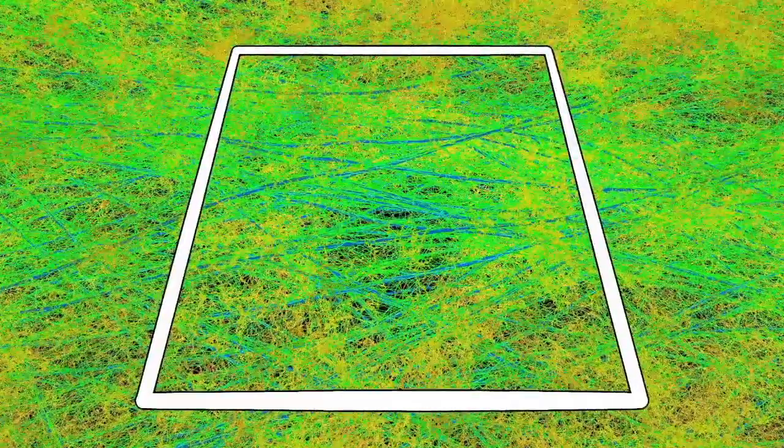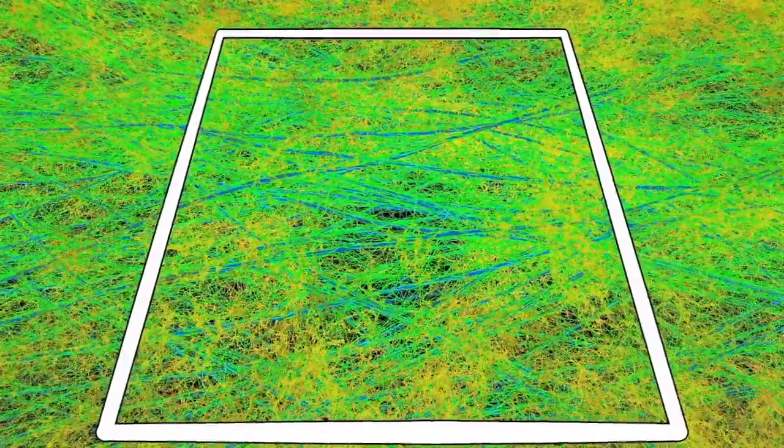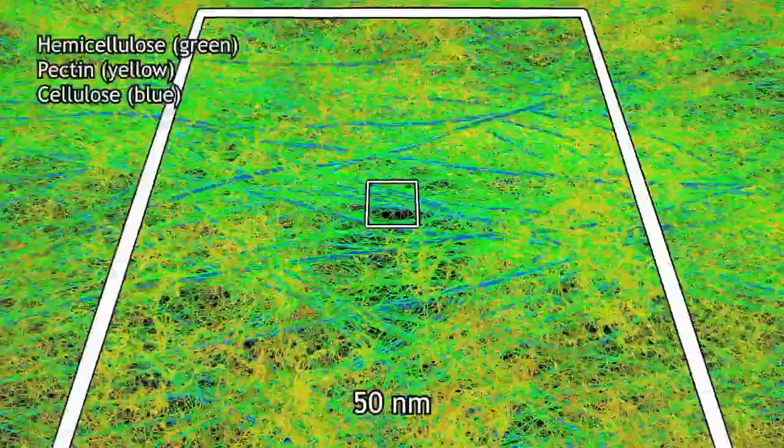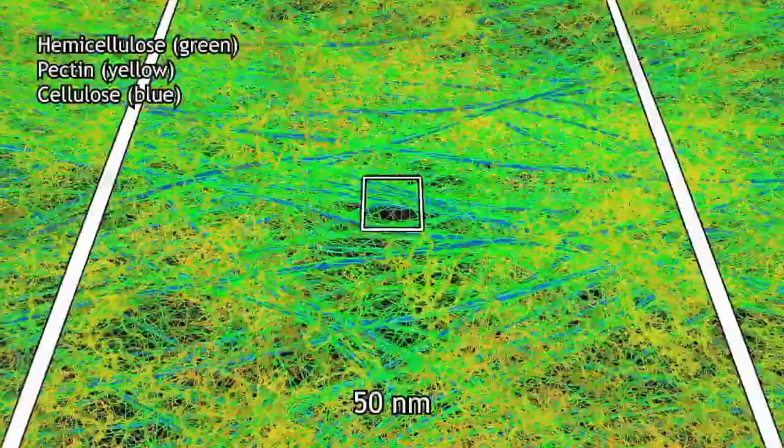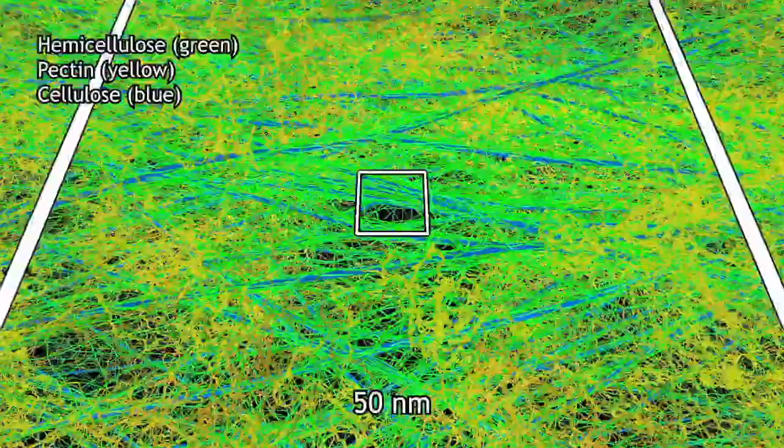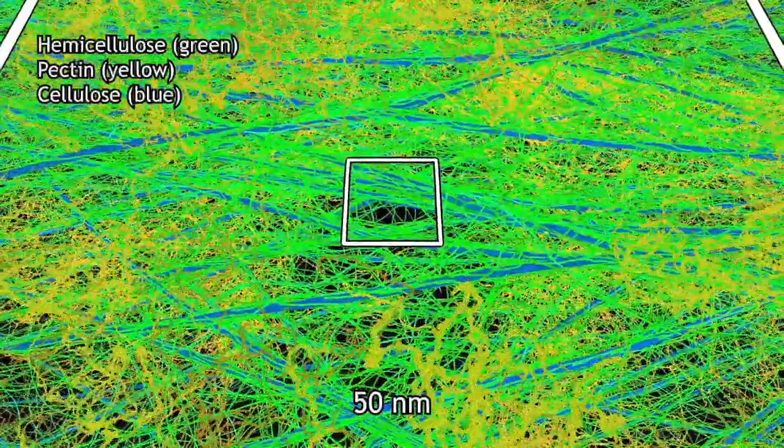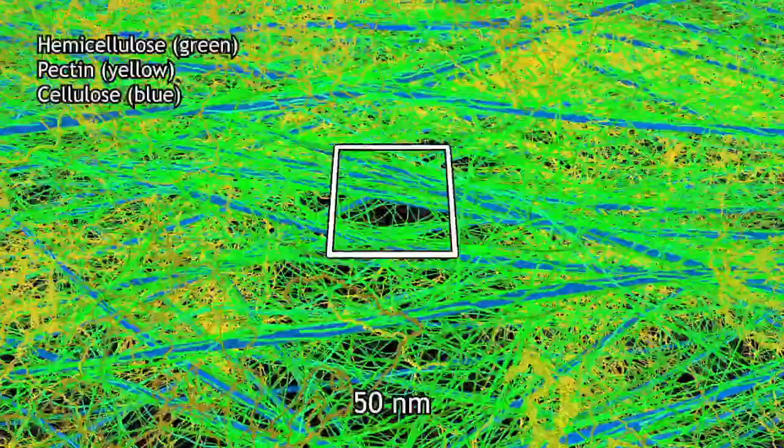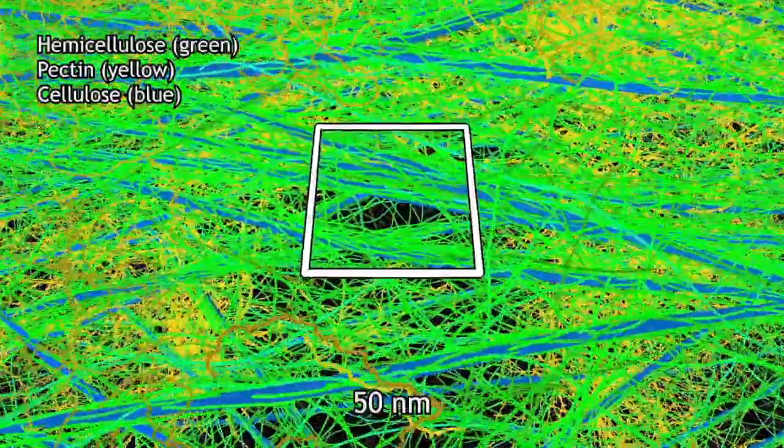The primary wall is made of carbohydrate polymers laid down in layers and branching networks. This illustration presents a model of carbohydrate structure that includes hemicellulose, pectins, and strong cellulose fibers.